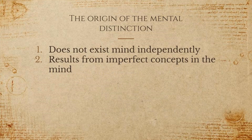The origin of the mental distinction: the mental distinction does not exist without a mind knowing it, and it results from imperfect concepts in the mind. God does not have any kind of mental distinctions because God knows everything perfectly, but humans know things imperfectly, and as a result they have different ideas about things which imperfectly map onto the objects they represent.